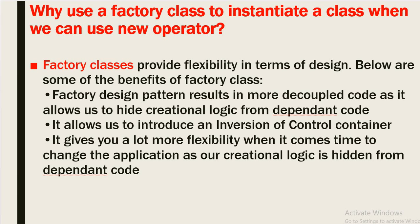Why use a factory class to instantiate a class when we can use the new operator in Java? Factory classes provide flexibility in terms of design. Factory design pattern results in more decoupled code as it allows us to hide creational logic from dependent code, and it allows us to introduce an inversion of control container. It gives us a lot more flexibility when it comes time to change the application as our creational logic is hidden from the dependent code.